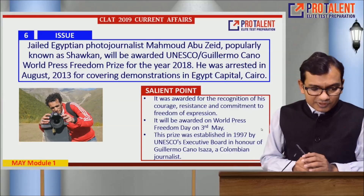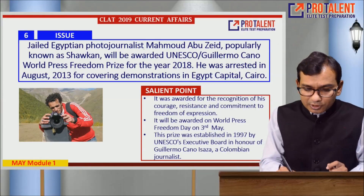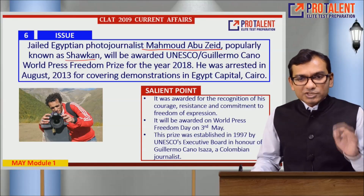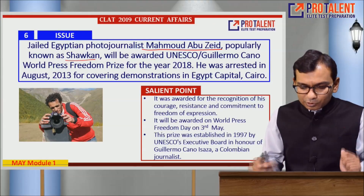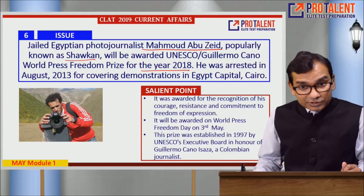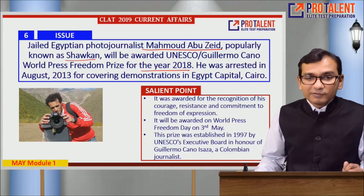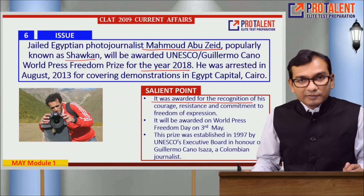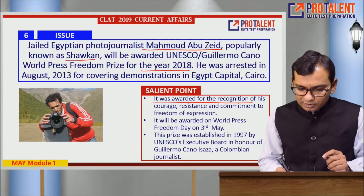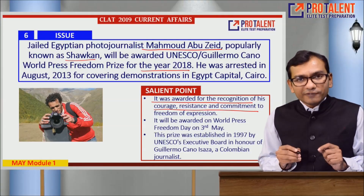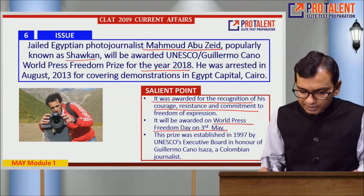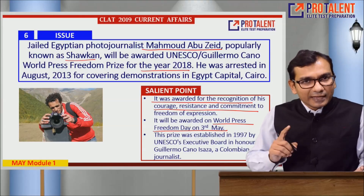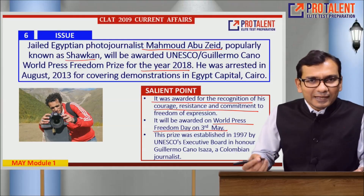Point six: jailed Egyptian photojournalist Muhammad Abu Zaid, popularly known as Shawkan, will be awarded the UNESCO Guillermo Cano World Press Freedom Prize for 2018. He was arrested in August 2013 for covering a demonstration in Egypt's capital, Cairo. This award recognizes his courage, resistance, and commitment to freedom of expression, and it will be awarded on World Press Freedom Day, May 3rd.